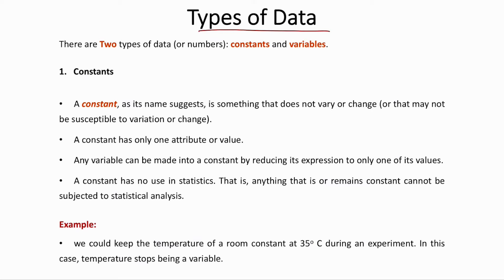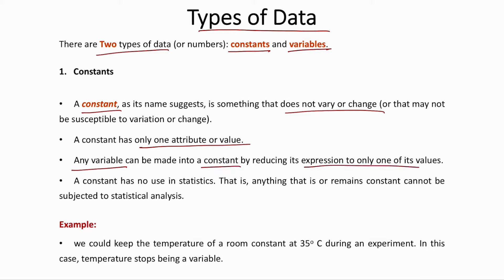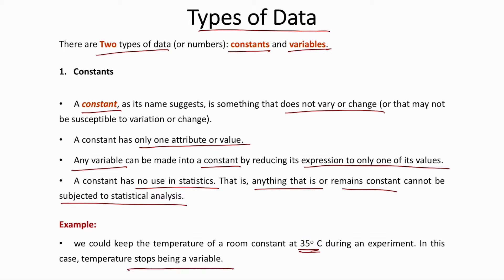There are two types of data: constants and variables. A constant, as the name suggests, does not change — it has only one value or attribute. Any variable can be made into a constant by fixing it to one of its values. For example, fixing a person's gender makes it a constant because it does not change. Constants have no use in statistics, as anything remaining constant cannot be subjected to statistical analysis. For instance, room temperature fixed at 35°C during an experiment stops being a variable and becomes a constant.